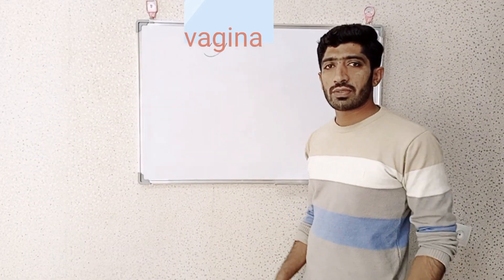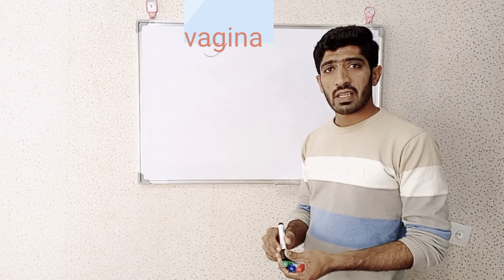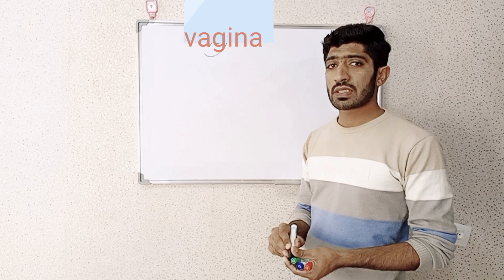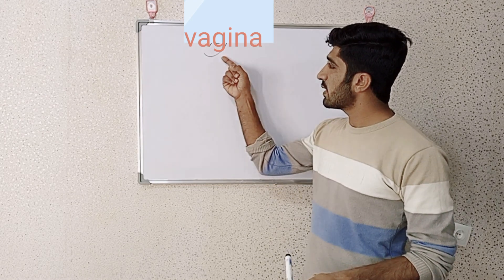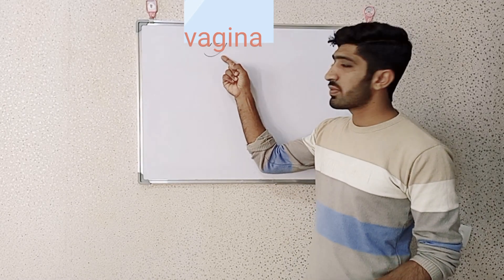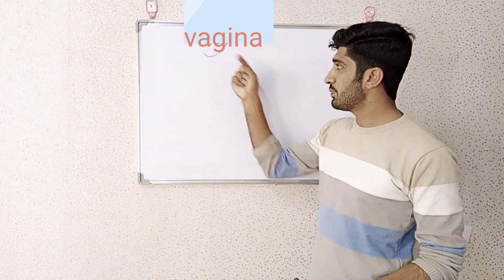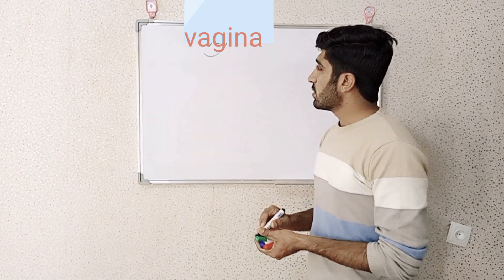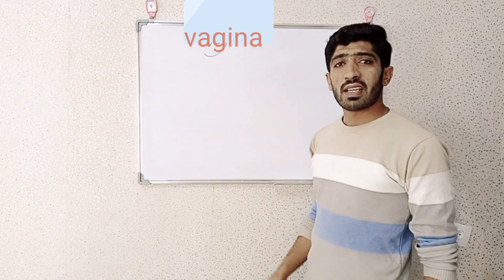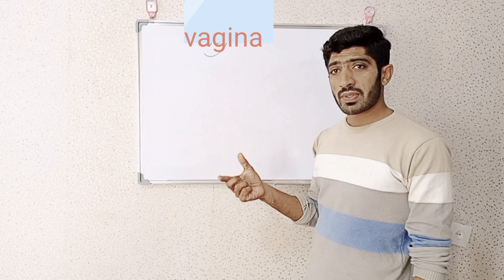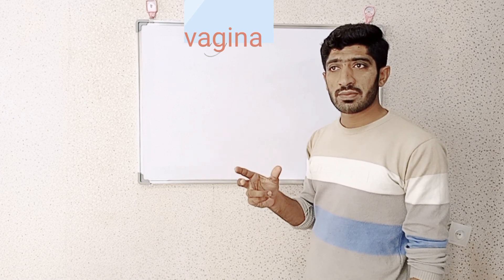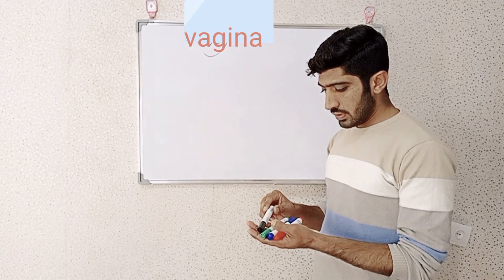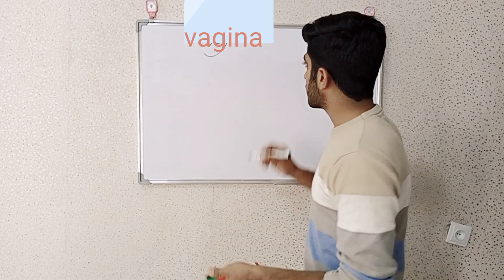Hello everyone, today we are going to talk about an organ of the female reproductive system, and that is the vagina. The vagina is an elastic and muscular canal with a soft lining which provides lubrication and sensation. So let me draw the structure.